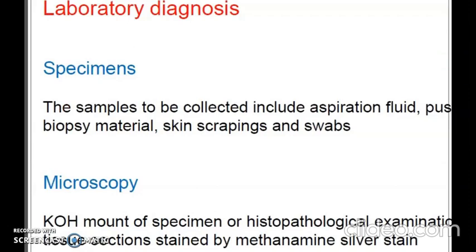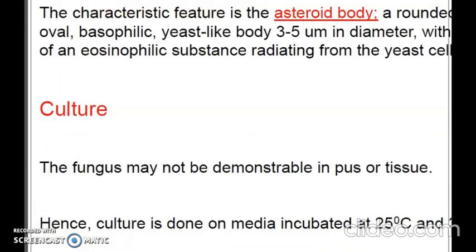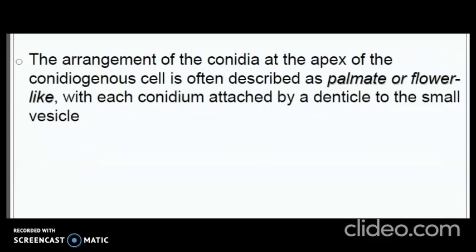For laboratory diagnosis of sporotrichosis, samples include aspiration fluid, pus, biopsy material, skin scrapings and swabs. Microscopy can be performed with KOH mount, or histopathological examination of tissue sections stained by methenamine silver stain. The characteristic feature is the asteroid body: a rounded oval basophilic yeast-like body 3 to 5 micrometers in diameter, consisting of an eosinophilic substance radiating from the cell. The fungus may not be demonstrable in tissue, so culture is done on media incubated at 25°C. The conidia are arranged in a rosette or flower-like arrangement at the apex of the conidiogenous cell.